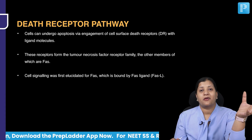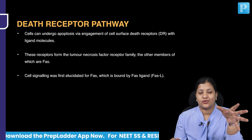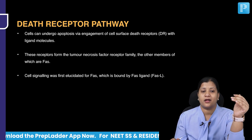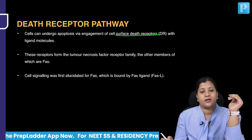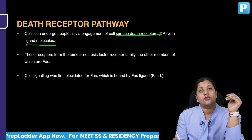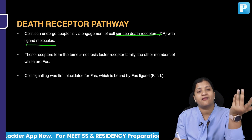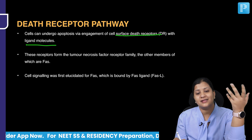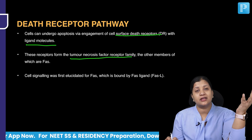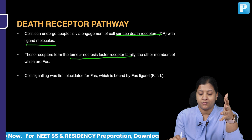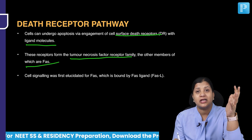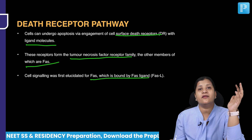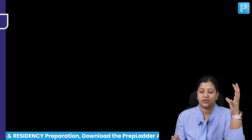What is the death receptor pathway, also called the extrinsic pathway? In this extrinsic pathway, there is engagement of the cell surface death receptor with a ligand molecule — a receptor-ligand interaction happening outside of the cell. The extrinsic receptors are basically tumor necrosis factor receptors or Fas receptors, and cell signaling occurs when they bind to the ligand called the Fas ligand.